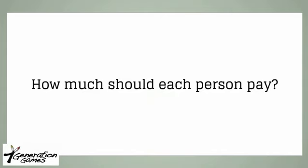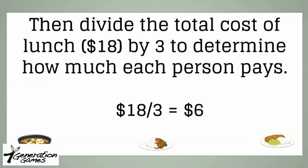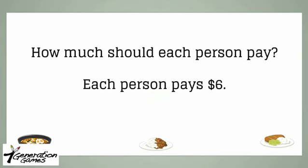As we know, to solve this problem, we're supposed to find out how much each person should pay. To do so, we take the total sum of their meal, $18, and divide it by 3. 18 divided by 3 is 6. So, the answer is $6.